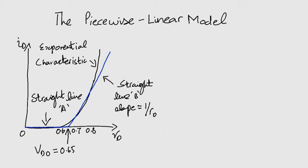Line A is a straight line with zero slope and line B has a slope of 1 over Rd. Rd is the inverse of the slope of line B. Vd0 is the intercept of line B on the voltage axis.